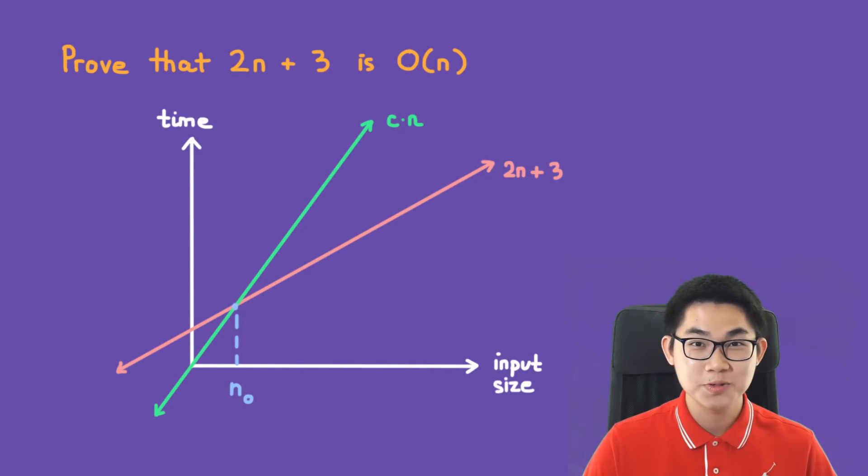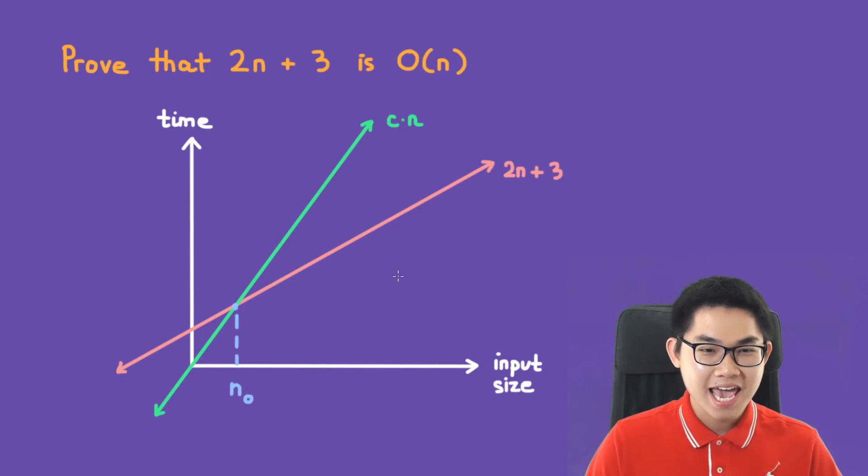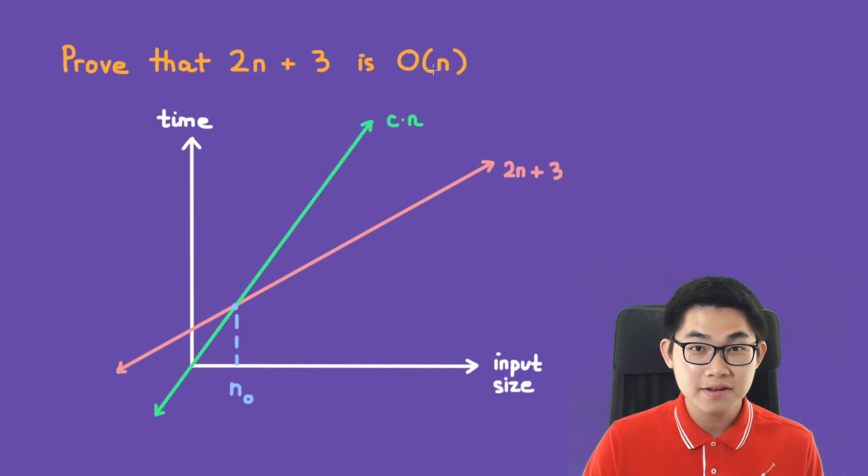Here we have a graph. The x-axis is the input size and the y-axis is basically the time. Here we have our function 2n plus 3. When they want you to prove that it is O(n), we just want to show that there is a function c times n where c is just a number.